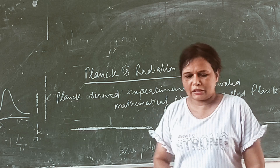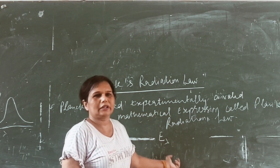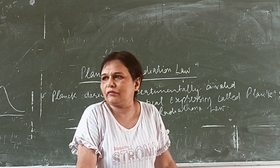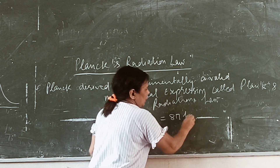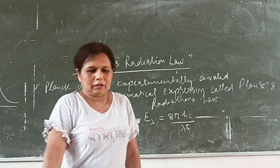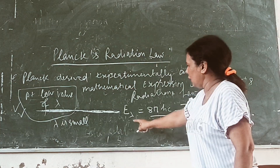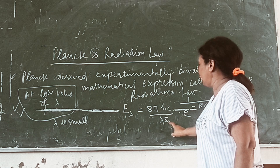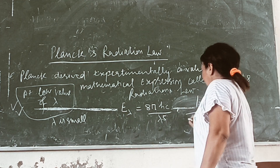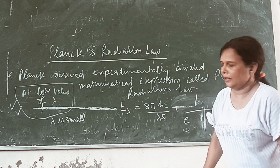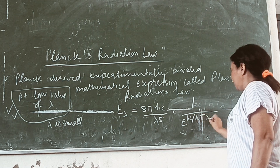The mathematical relation is written as E_λ — the energy emitted by a black body as a function of wavelength of radiation absorbed or emitted. E_λ is equal to 8πhc over λ to the power 5, multiplied by 1 over (e raised to hc over kTλ minus 1). This is the relationship known as Planck's Radiation Law.